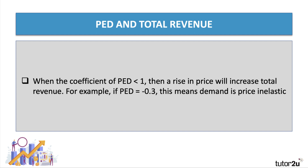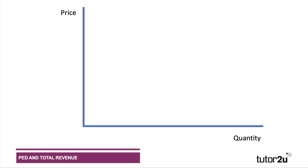Let's take an example. When we have a low coefficient of demand elasticity — for example, minus 0.3 — and we lift the price by 20%, we'd only see a 6% fall in sales, giving a coefficient value of 0.3. So when the coefficient is very low, a price increase will increase total revenue.